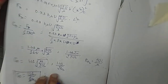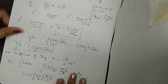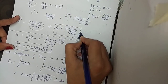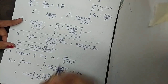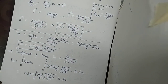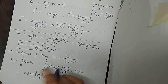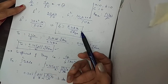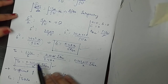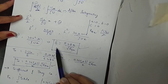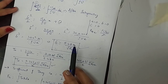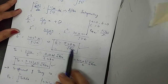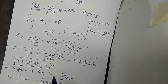So we have found the boundary layer thickness in terms of Reynolds number, the shear stress in terms of Reynolds number, and the coefficient of drag in terms of Reynolds number. For any given velocity, using these equations we can find the thickness, shear stress, and coefficient of drag. Next time we will solve some different examples — till then, thank you.